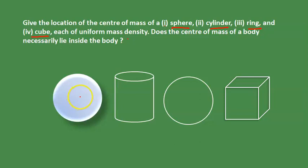For all geometrical shaped bodies, the center of mass lies at its geometric center. The center of mass of a body is at the geometric center. This is the first point.